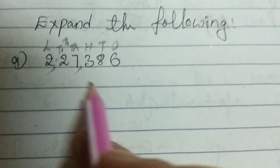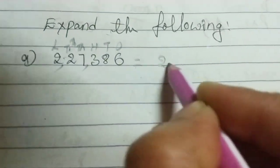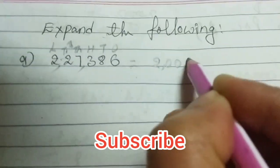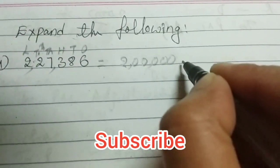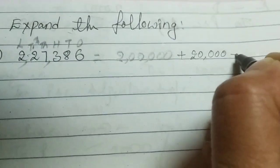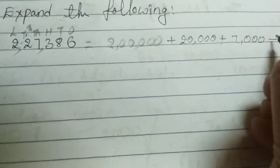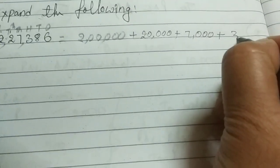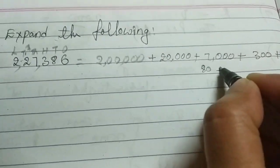So, how can we expand this one? Is equal to 2 lakhs plus 20,000 plus 7,000 plus 300 plus 80 plus 6.